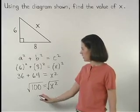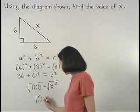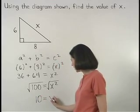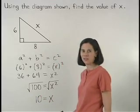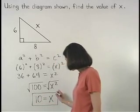On the left, the square root of 100 is 10, and on the right, the square root of x squared is x. So 10 equals x, and our answer is x equals 10.